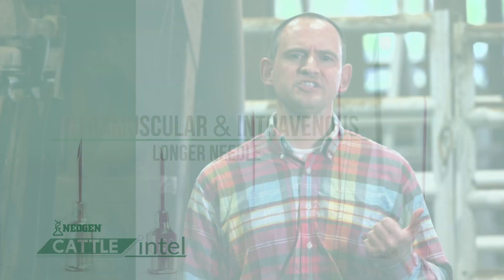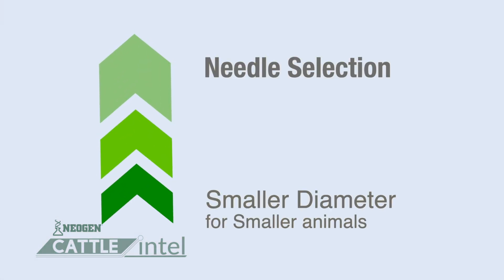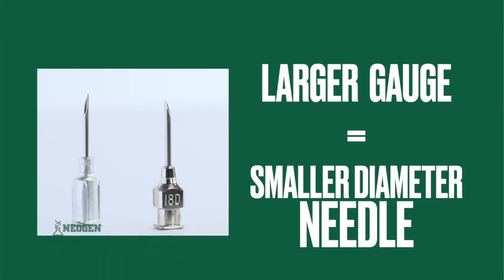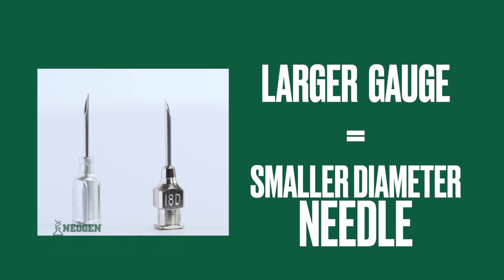When selecting the proper size of the needle based on diameter or gauge, smaller diameter needles will be utilized for smaller animals and larger diameter needles for larger animals, understanding that a larger number in gauge equates to a smaller diameter needle.